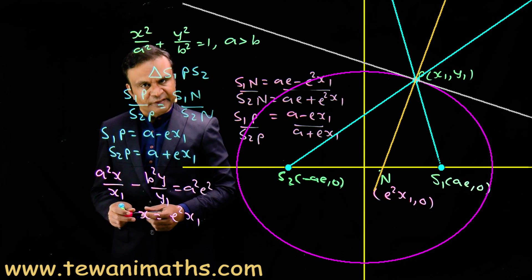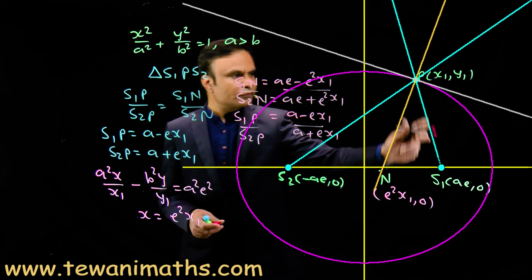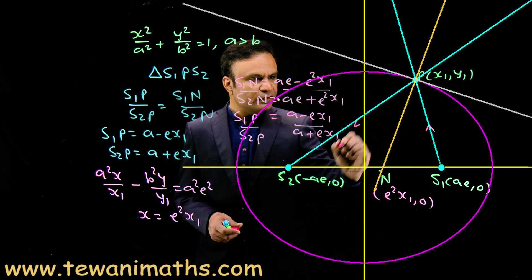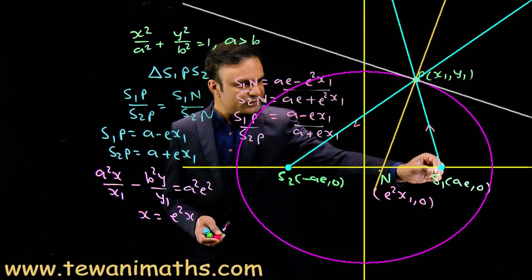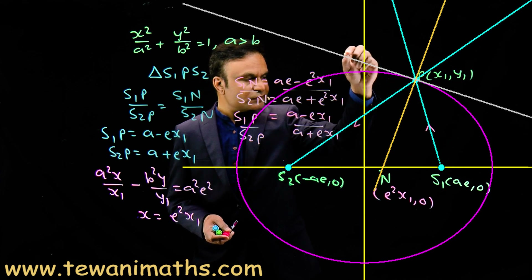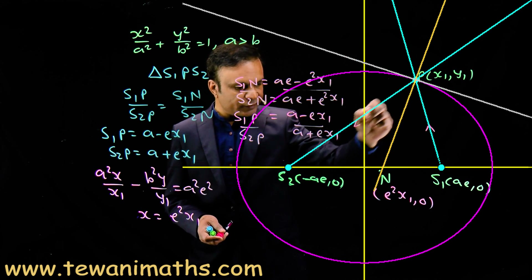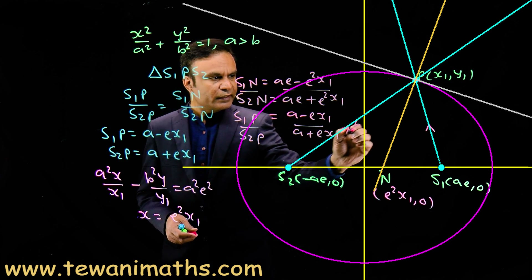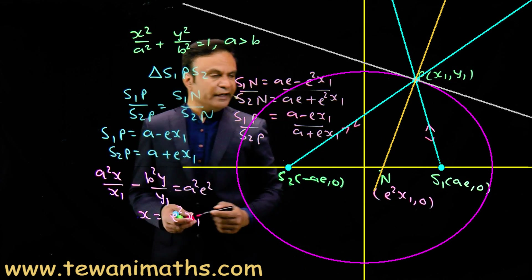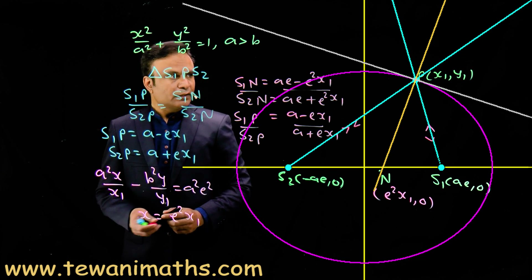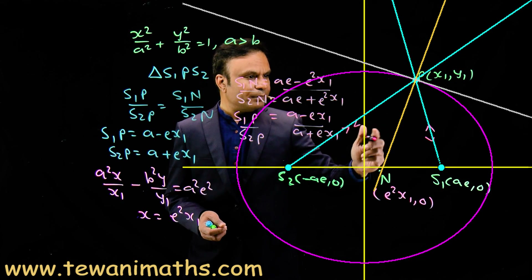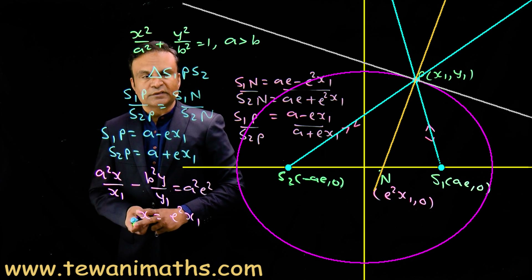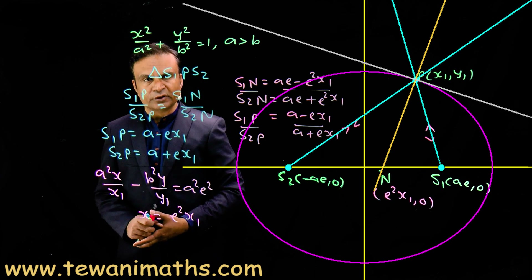This also states the reflection property of the ellipse. If S1P is the incident ray, then S2P will be the reflected ray. If this is the incident ray, then this will be the reflected ray, because the normal bisects angle S1PS2. The same reflection property holds for the hyperbola.